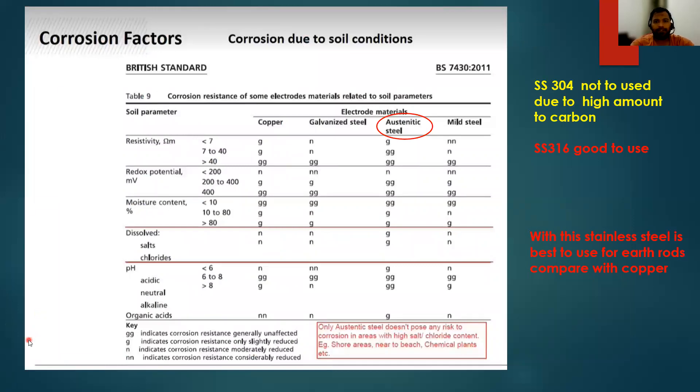In this slide, I explain about the comparison between copper, galvanized steel, austenitic steel and mild steel. What will happen according to the soil parameters? What type of soil parameter? Resistivity, redox potential mV and moisture content, dissolved salts and chlorides, and acidic neutral alkaline organic acids. What will happen in these conditions? If it's acidic nature less than 6, 6 to 8, or greater than 8, what will happen to our material?